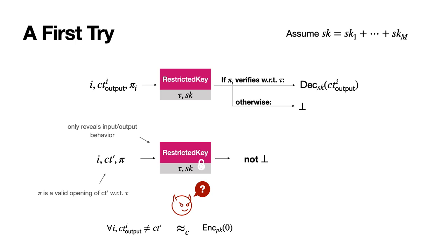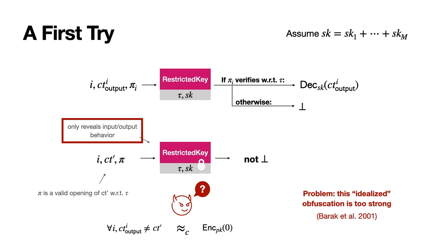If you're familiar with the obfuscation literature, you'll know there is an obvious problem: the obfuscation scheme is too strong, as it's impossible to have an obfuscator which hides all non-input-output behavior. The best we can hope for is an obfuscator satisfying the weaker indistinguishability obfuscation definition. We're still able to construct a ciphertext as an obfuscated circuit with the master ciphertext hardcoding using indistinguishability obfuscation, by using a tool called somewhere statistically binding hash functions. I'll refer you to the paper for the details.